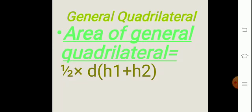General quadrilateral. The area of a general quadrilateral is equal to half into d into (h1 + h2), where d is the diagonal, h1 and h2 are the heights of the two triangles formed. We draw one diagonal in a quadrilateral to divide it into two triangles, find the area of each triangle, and add them together.